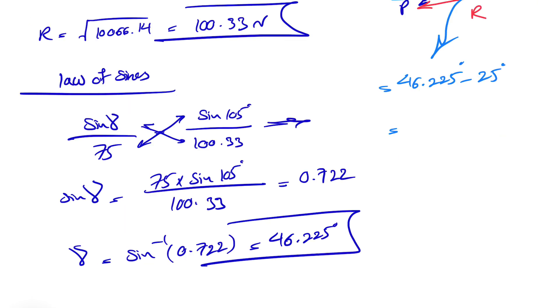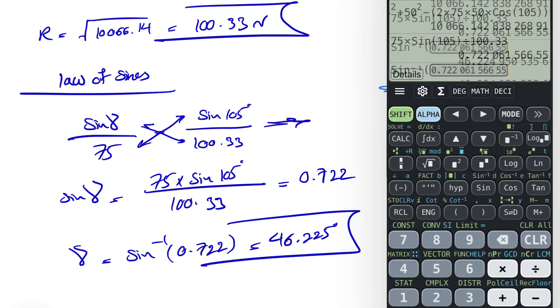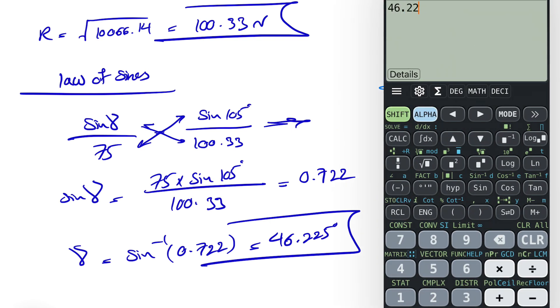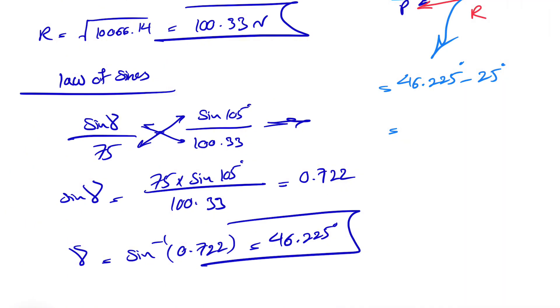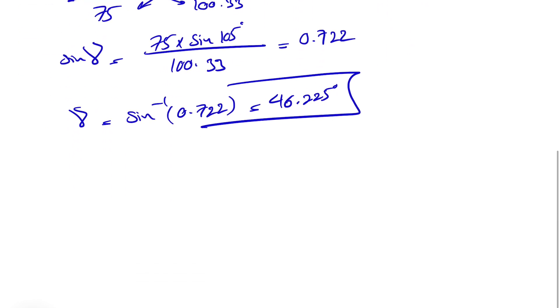...which we know would be gamma minus 25, or we found gamma 46.225 minus 25 degrees. So that angle is going to give us the angle with the horizontal. So 46.225 minus 25 is going to give us 21.225 degrees.